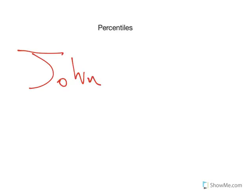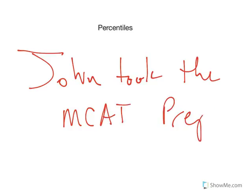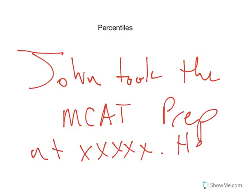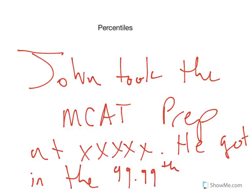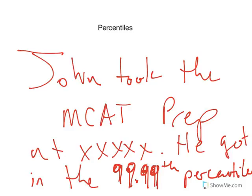Sometimes you'll see on advertisements things like: John took the MCAT prep at such and such a place. He got in the 99.99th percentile. That means that whoever this John guy is that took this MCAT prep class, he outscored 99.99% of the people who took the MCAT.